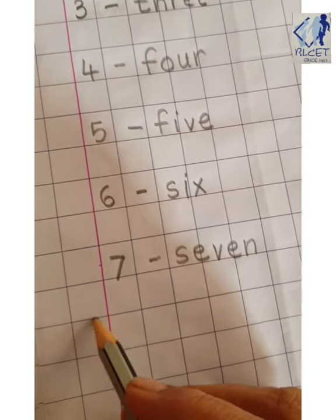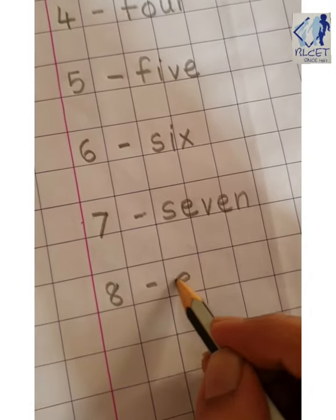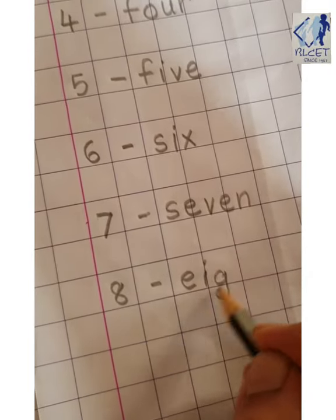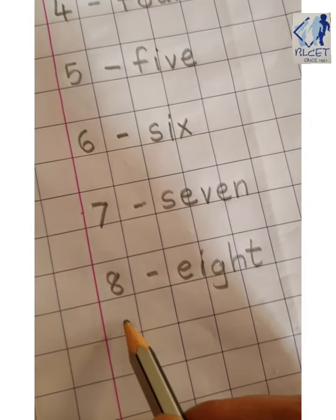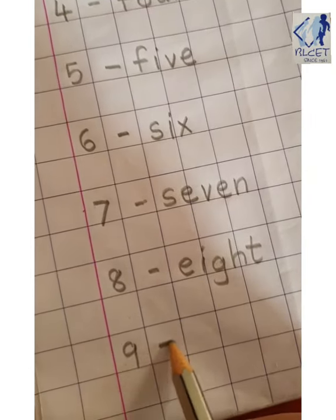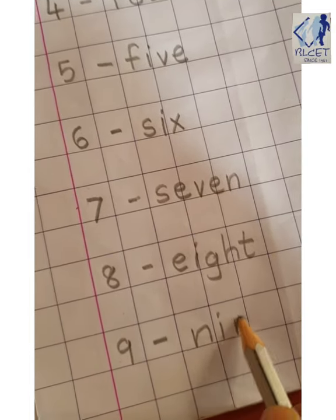Again leave 1 box. Write 8. Put a dash. E-I-G-H-T, 8. Leave 1 box. Write 9. Put a dash. Spelling is N-I-N-E.